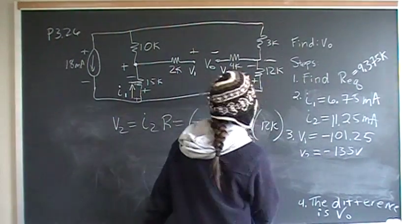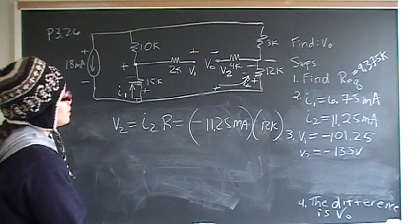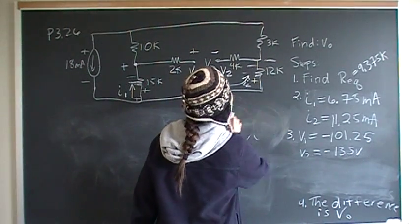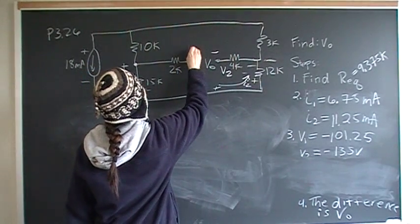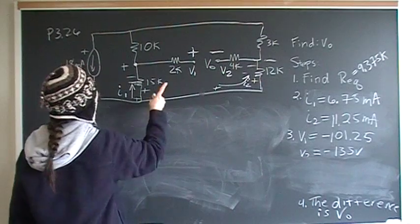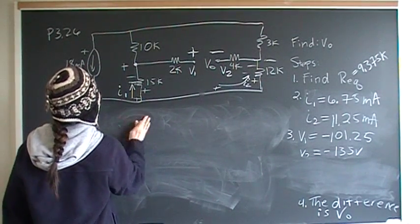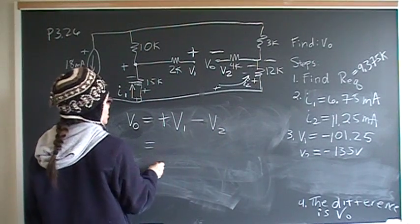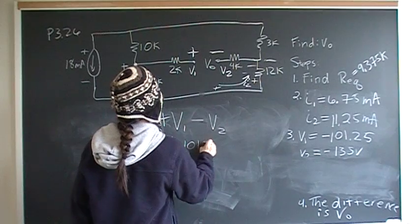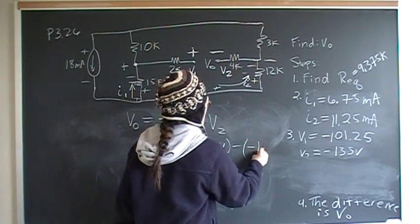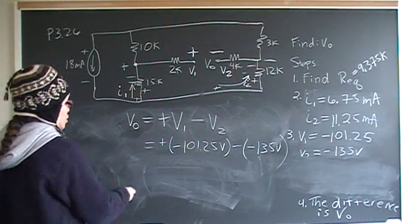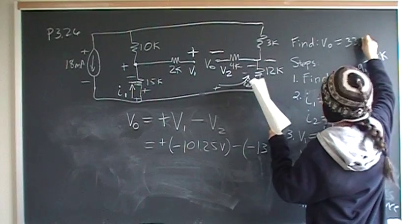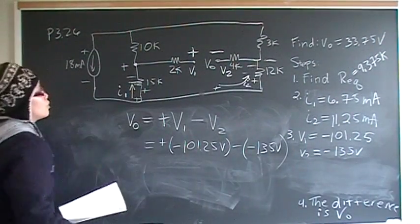Now step four is to take the difference between V1 and V2, and the difference is your Vout, or V0. The schematic has given this terminal a positive and that terminal a negative. So we start with the positive: V0 equals plus V1 minus V2. Plugging in the numbers: plus negative 101.25 volts, minus negative 135 volts. When you do that calculation, you should come up with V0 equals positive 33.75 volts. And that is the answer to problem 26.